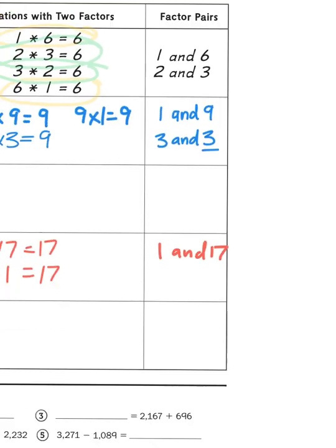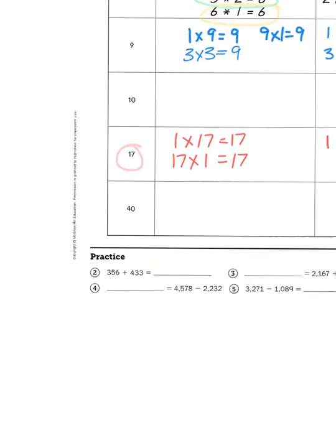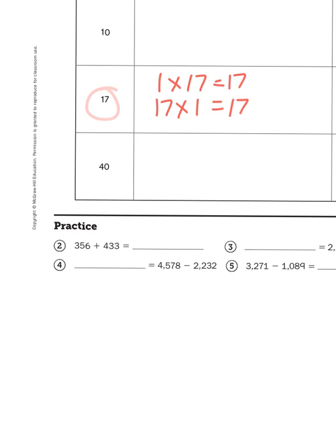And that is how we approach these problems. We are just looking for how many different ways can we multiply two numbers to get to our products that are in the left-hand column. Now lastly, let's take a look down at the bottom. These addition and subtraction problems.